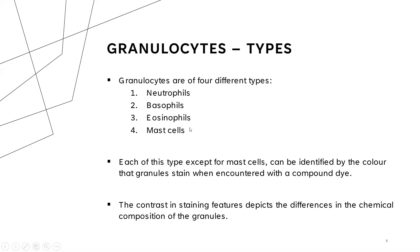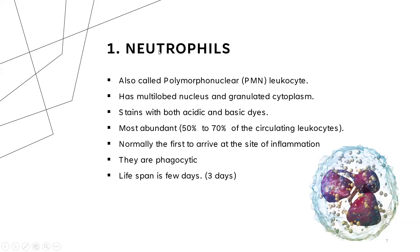There are four different types: neutrophils, basophils, eosinophils, and mast cells. Each one of them, except for mast cells, can be identified by the color of the granules that they stain with. The contrast in staining feature depicts the differences in the chemical composition of each one of these. Starting with neutrophils — they are called neutrophils because they can stain with both the acidic and basic dye, meaning they take a neutral basis in terms of staining. That's how we get the name neutrophils.